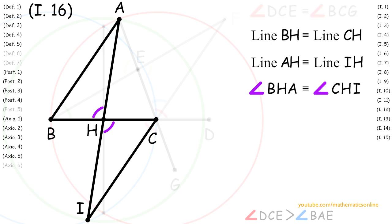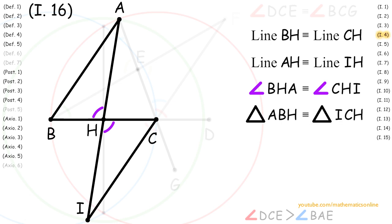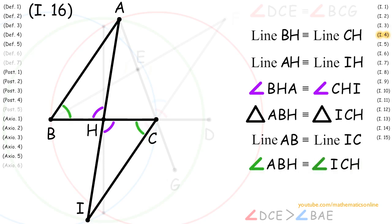Since triangle ABH and triangle ICH both share a corresponding side, angle, and side, then by Proposition 4 triangle ABH is congruent to triangle ICH. Therefore line AB is congruent to line IC and angle ABH is congruent to angle ICH.